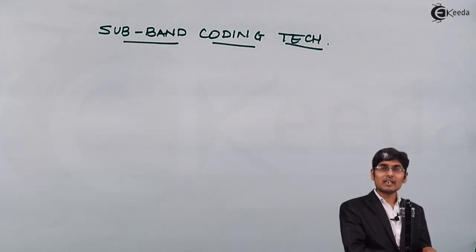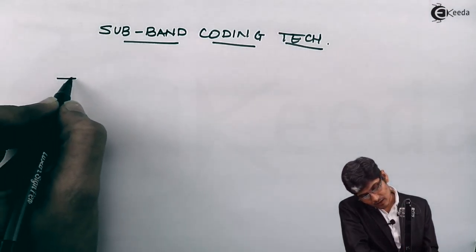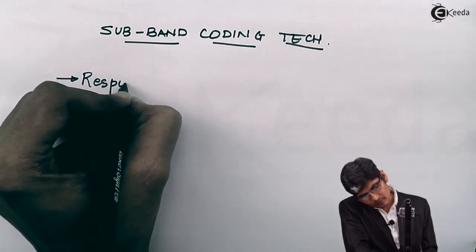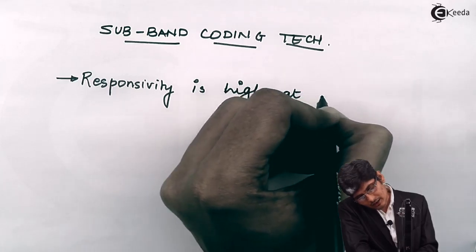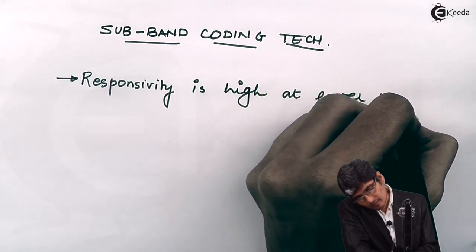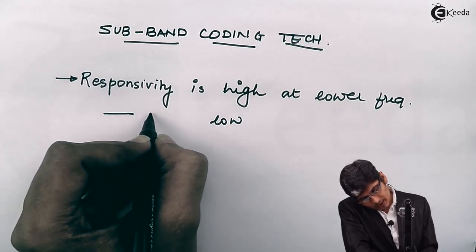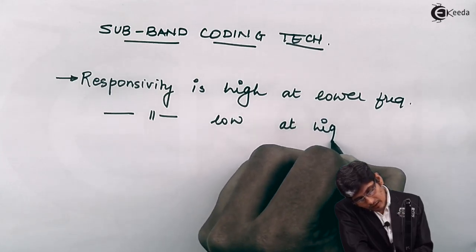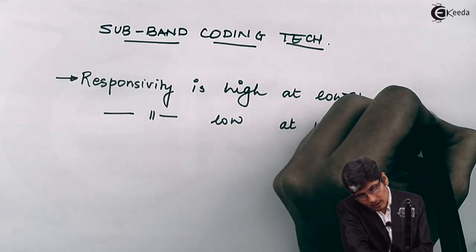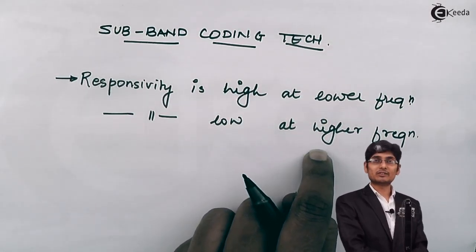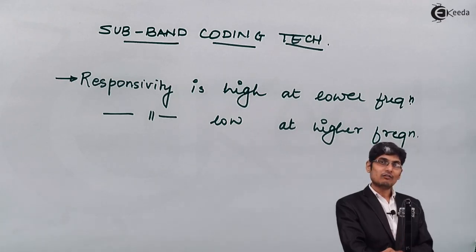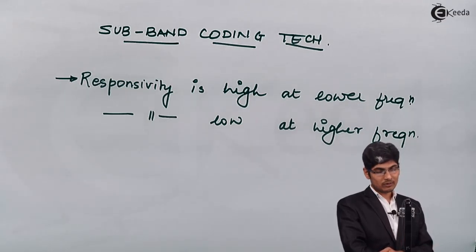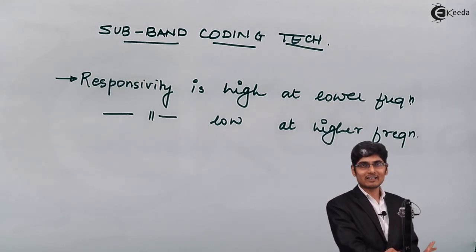In sub-band coding, the responsivity of the ear is high at lower frequencies and low at higher frequencies. Hence we will give fewer bits to high frequency and a larger number of bits to lower frequency. For this reason, we first need to divide the given audio signal into frequency bands — a lower frequency band and a higher frequency band.